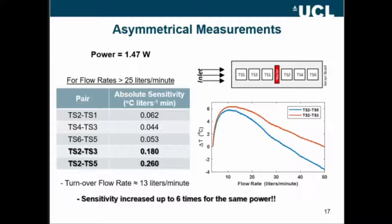For the same power, the power is at 1.47 watts. Also, it's interesting to know that the turnover flow rate, where the maximum output occurs, has moved to the left compared to the symmetrical measurements. Now it's around 13 liters per minute instead of 20, and that's interesting because now you could use the asymmetrical topology for a bigger range of flow rates.